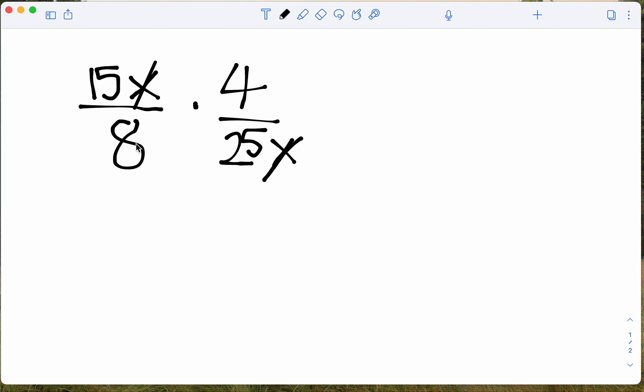And being the mathematicians that we are, we can observe that if we factor these numbers, we can simplify even further rather than multiplying straight through right now and then reducing our answer. So 15 can be broken down to 5 times 3.